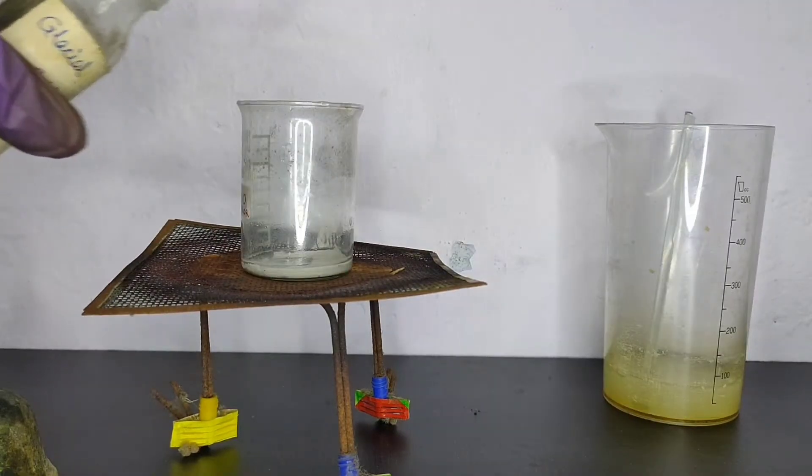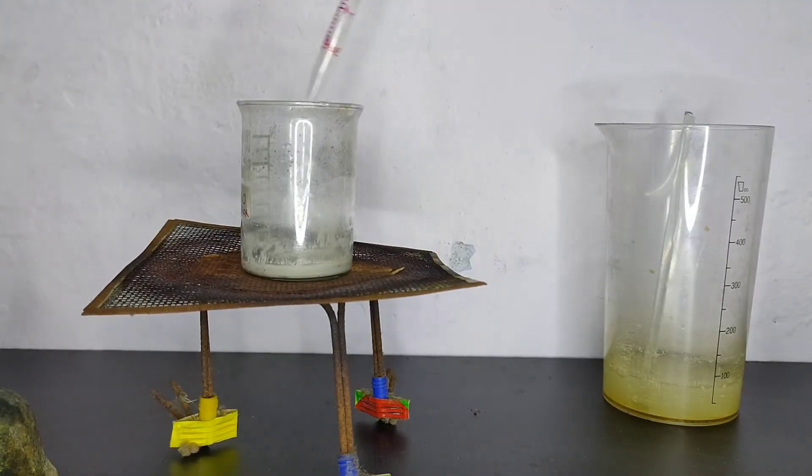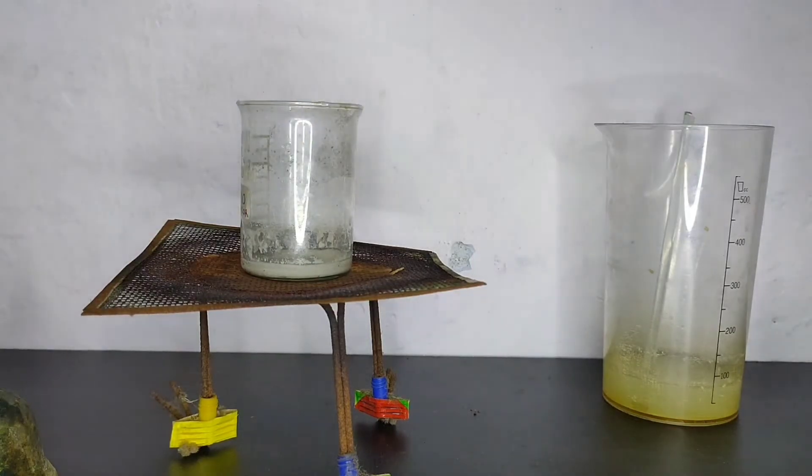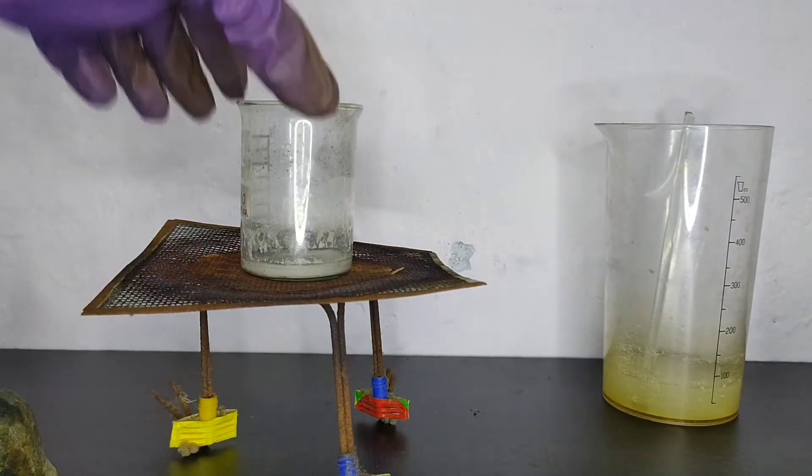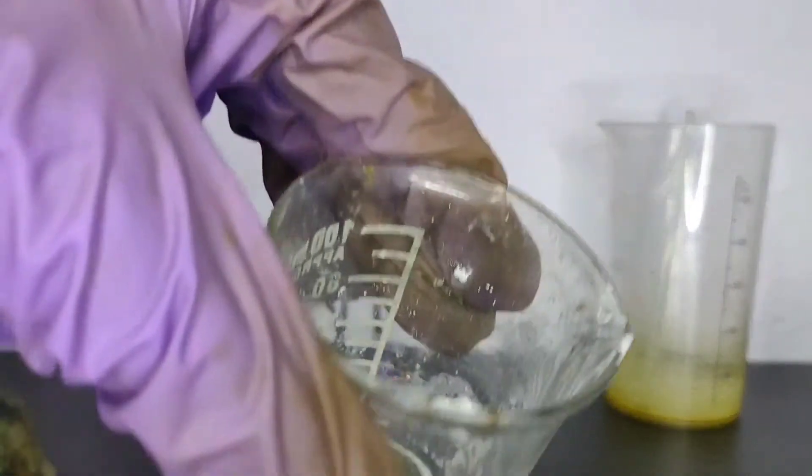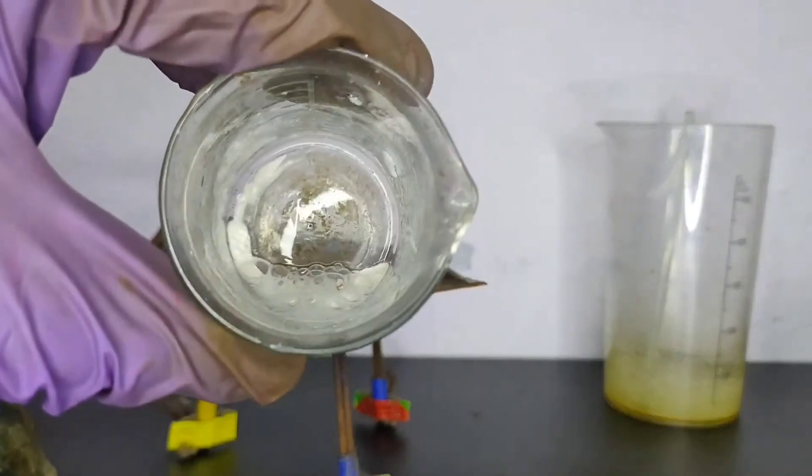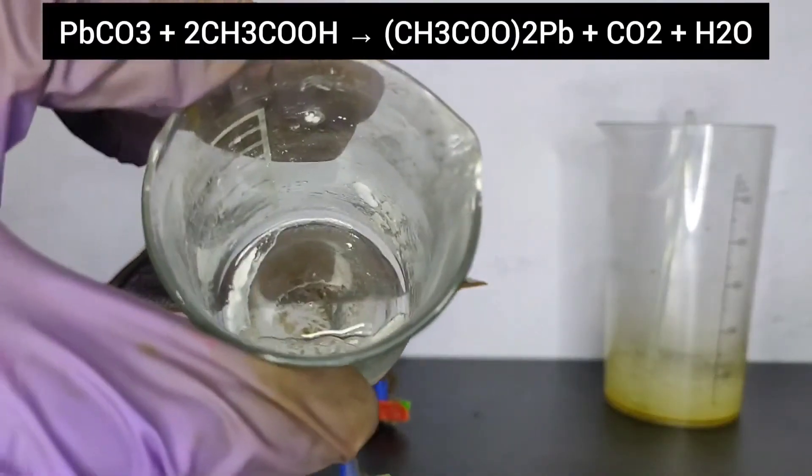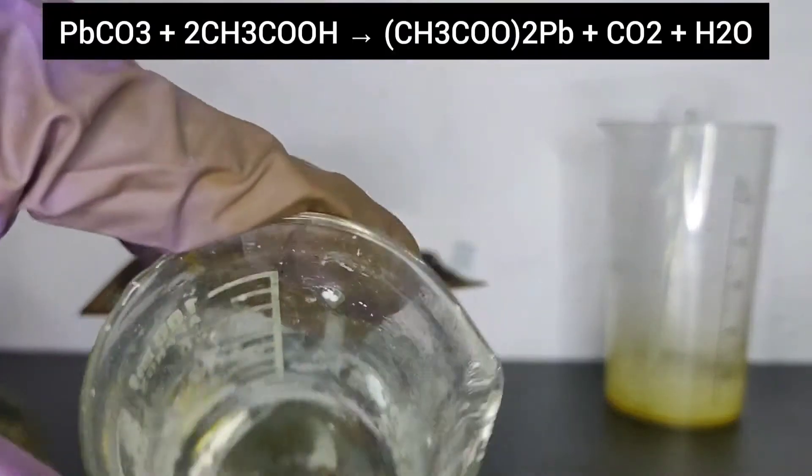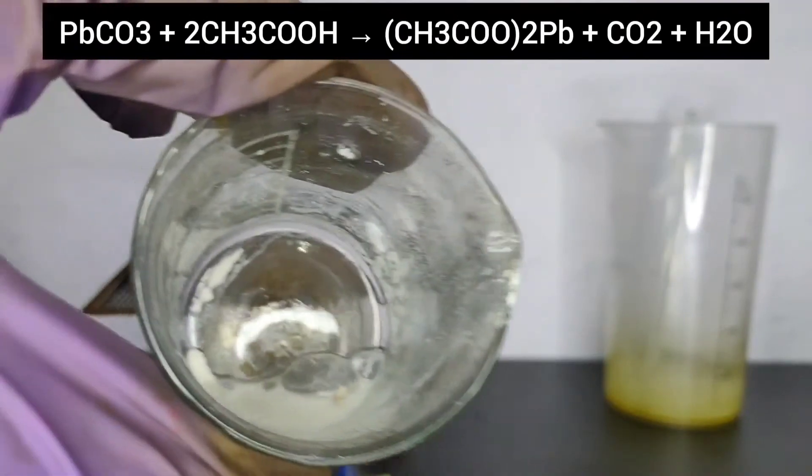Now I will be adding some glacial acetic acid to lead carbonate. Over here I am adding 0.5 ml of glacial acetic acid. On adding, effervescence of carbon dioxide is evolved. Lead carbonate is reacting with acetic acid to produce lead(II) acetate, carbon dioxide, and water.